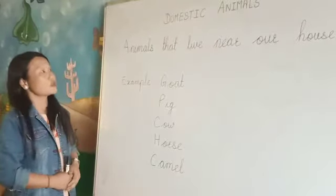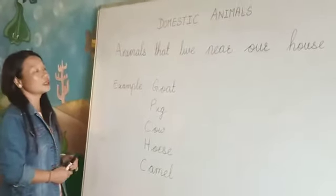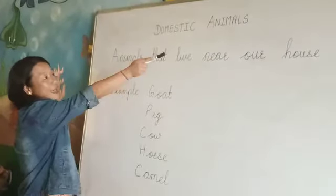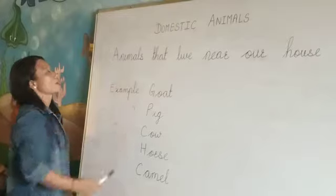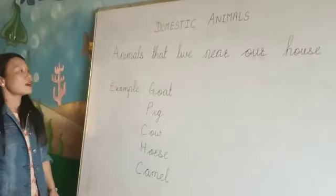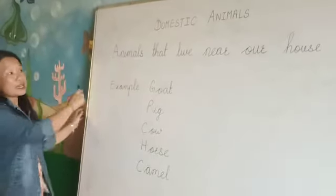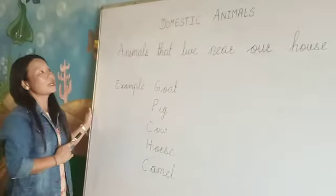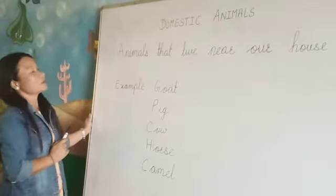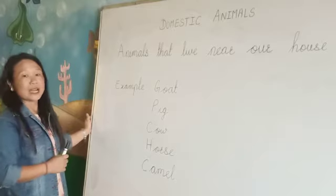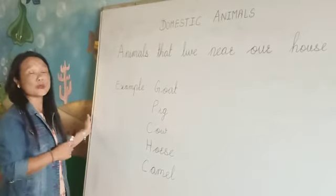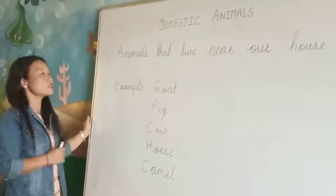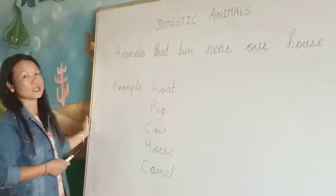Hello, today we will learn about domestic animals. There are many animals around us. They are wild animals, domestic animals, pet animals, and water animals.